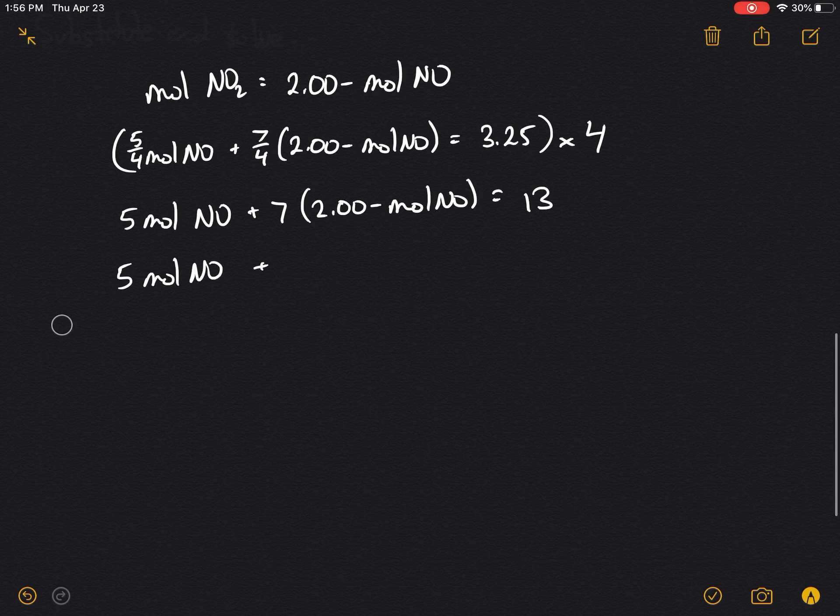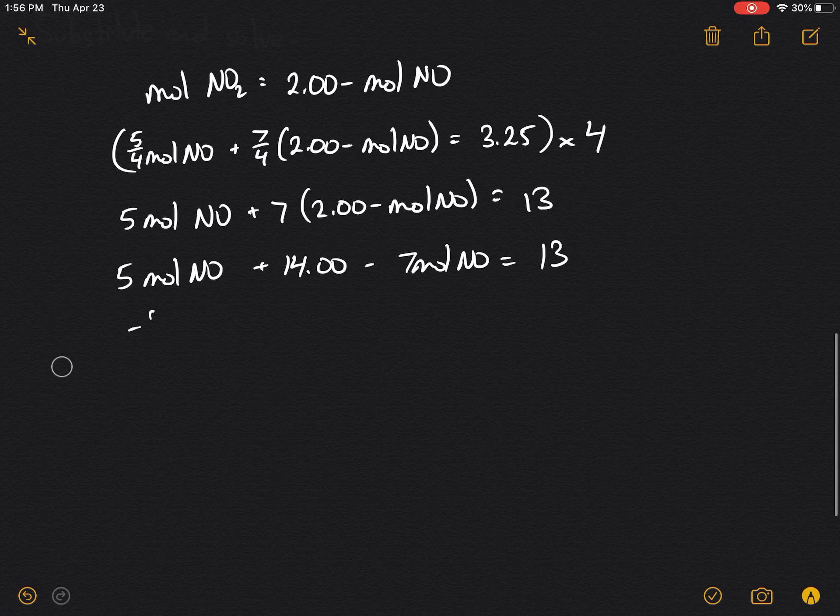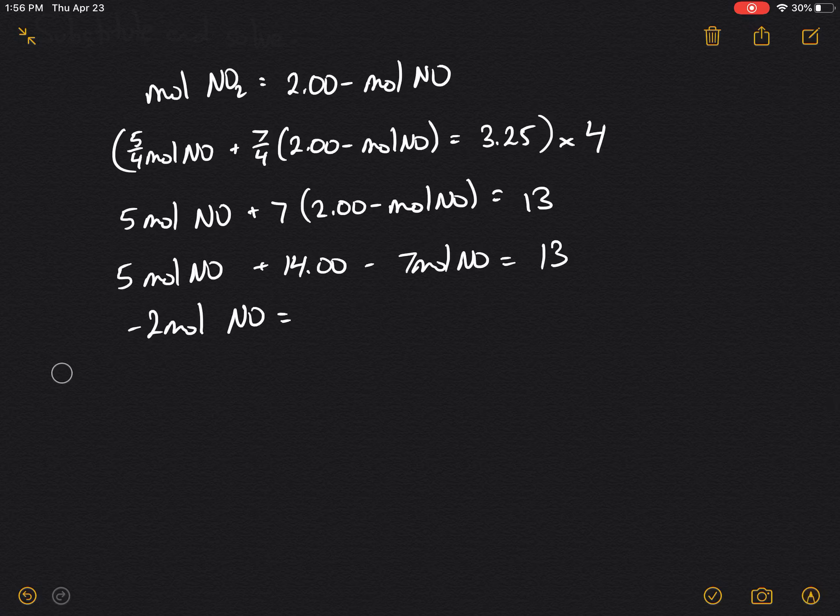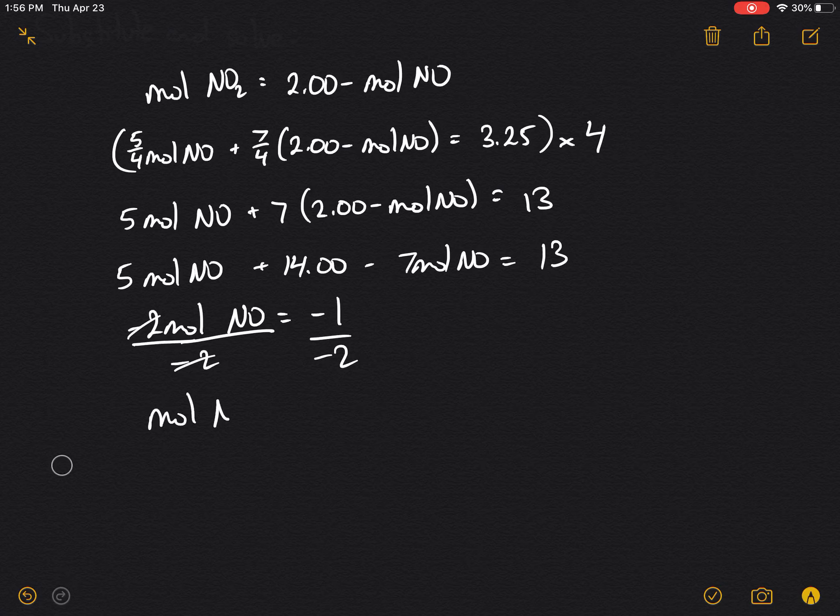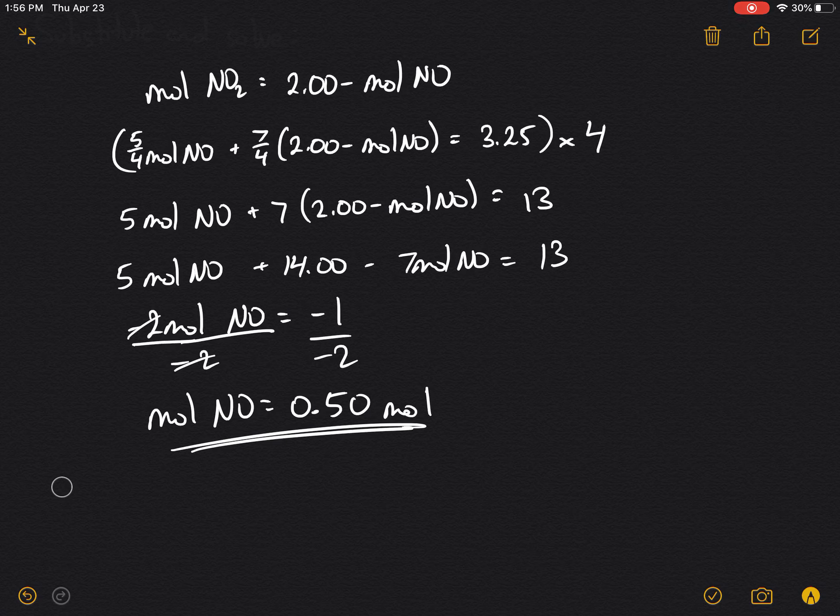Therefore, 5 moles of NO plus 14 minus 7 moles of NO is equal to 13. Negative 2 moles of NO is equal to negative 1. Dividing negative 2 on both sides, we can find that the mole of NO is equal to 0.50 moles. And there's our answer.